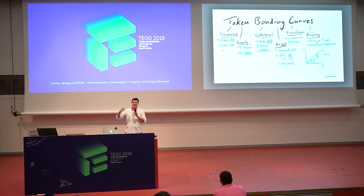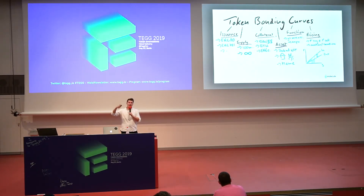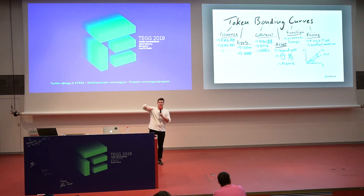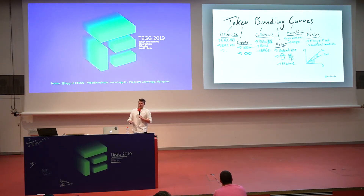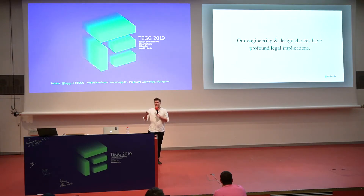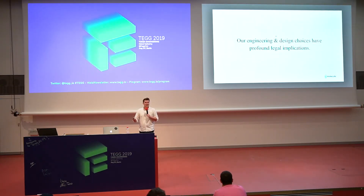The biggest legal implications come from both the asset in a curve and how we structure the pricing. The asset question is: what does this curve actually represent — is it a security, a membership, or a service level agreement? And the pricing question is whether we have different buy and sell structures — a pure bonding curve just measures interest in an asset, but we can also create revenue models where a central entity gets revenue from each trade. All engineering and design choices have really profound legal implications.